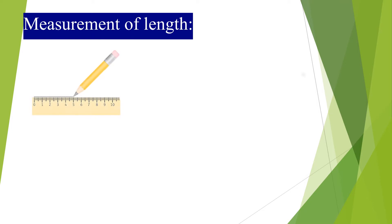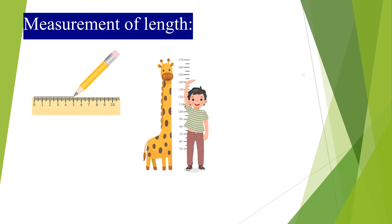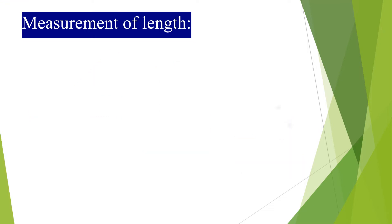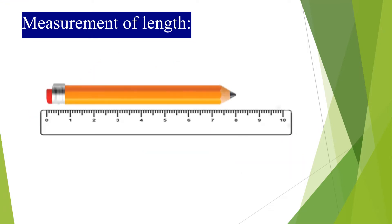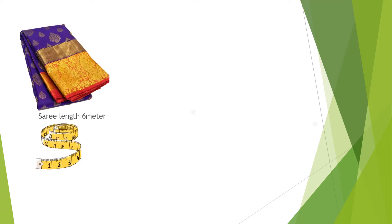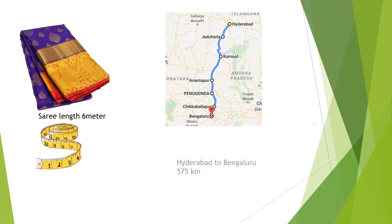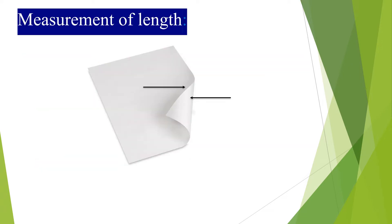Length is a measure of how long or how tall, or the distance between 2 things. For measuring the length of a pencil, we use centimeter. Here the length of a pencil is 8 centimeters. We use meter for measuring the length of a saree, and kilometer for measuring the distance between 2 places or things. To measure the thickness of a paper, we use millimeter.